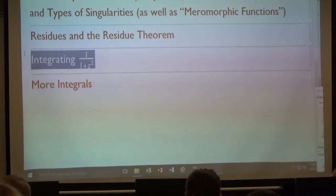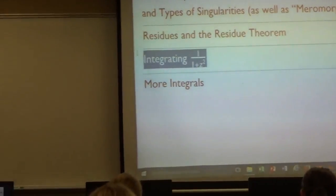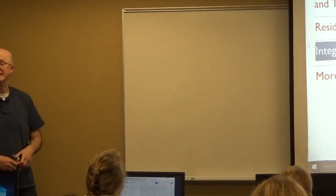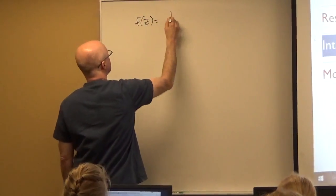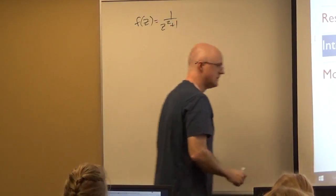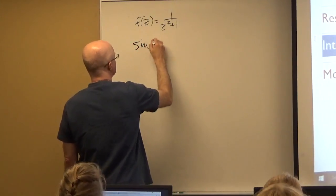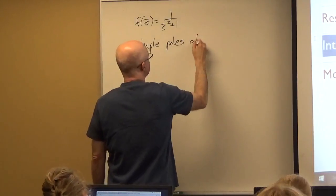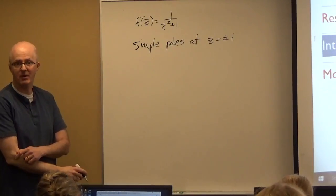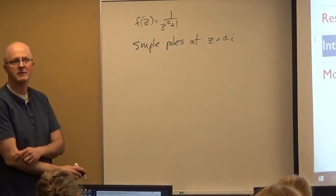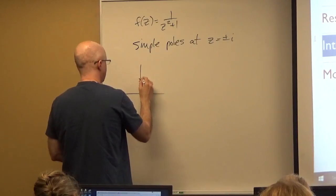Let's look once more at this example, taking it more rigorously — how you prove that the principal value of the integral of 1/(1+z²) from minus infinity to infinity is π using residues. The function has simple poles — that is, poles of order one — at z equals plus or minus i.